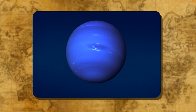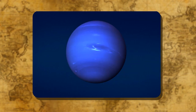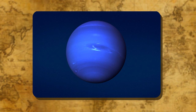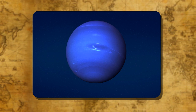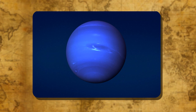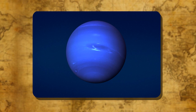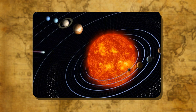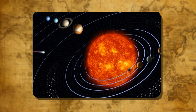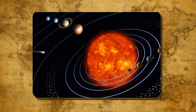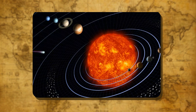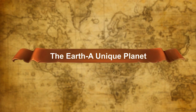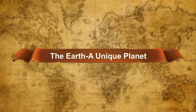Neptune: It appears blue in color and takes 165 years to travel once around the sun because of its longer orbit. It has no air and is very cold. Planets revolve around the sun in their definite paths, known as orbits. There are different orbits for different planets.